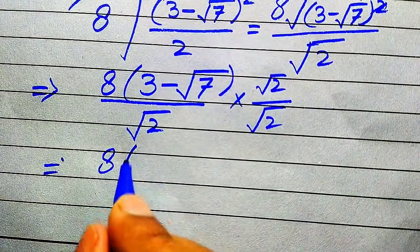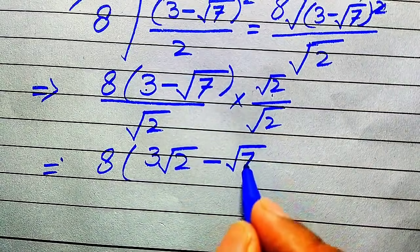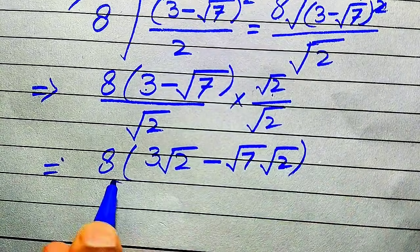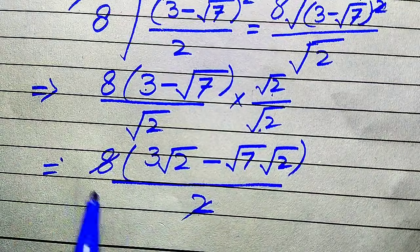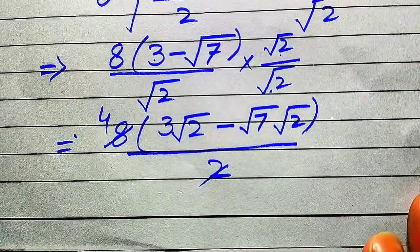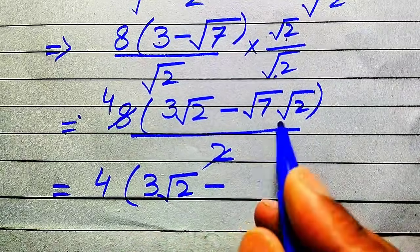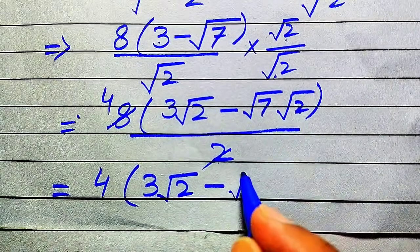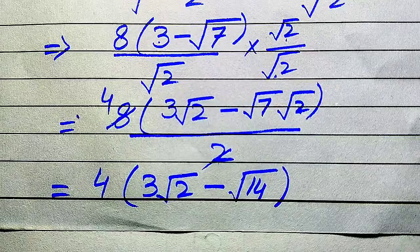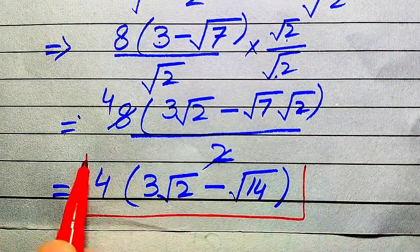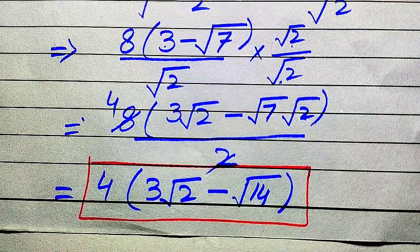Multiplying square root of 2 into both terms: 3 times square root of 2 minus square root of 7 times square root of 2, divided by square root of 2 times square root of 2, which equals 2. The 8 divided by 2 gives 4. So the final simplified answer is 4 times (3 square root of 2 minus square root of 14). Thank you for watching — please subscribe for more videos.